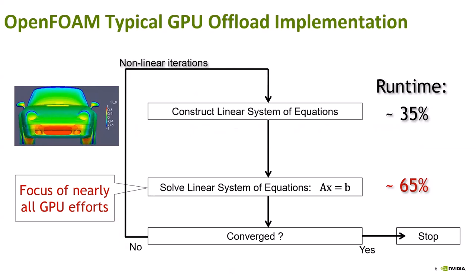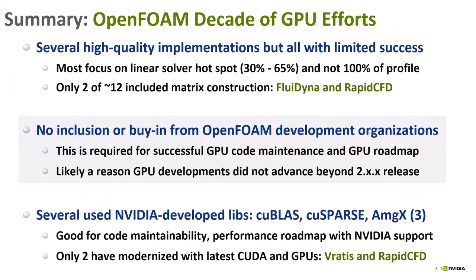GPUs cannot process without a CPU present — you start and end an OpenFOAM job on the CPU. Our implementation is the offload model focused on solving the linear system. That means only a portion of the code is accelerated — roughly 65% in favorable cases, but often not that high in real applications. The other 35% sits on the CPU. This is a hybrid arrangement. Because you don't have 100% of the computation on the GPU, you're limited by Amdahl's law on the achievable speedup. Two earlier implementations did include non-solver parts on GPU and showed good performance, but without involvement from OpenCFD they didn't advance much beyond version 2.